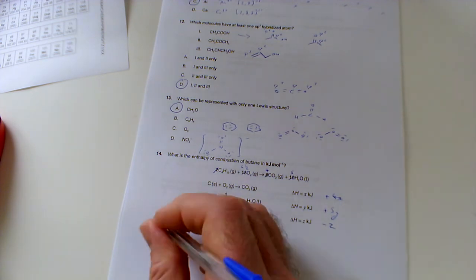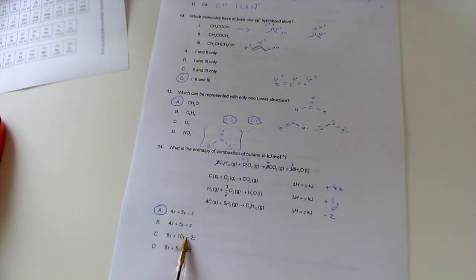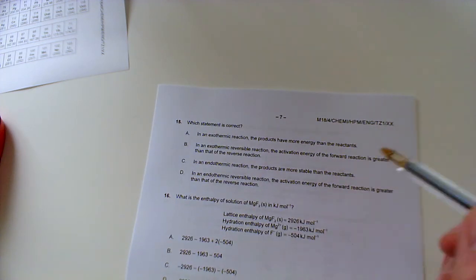Looking at the last equation, there's my butane but it's on the wrong side. It's a product where I need it as a reactant. The good news is there's one of them and I only want one, so basically I just need to flip this equation around. If I flip this equation around, all I need to do is change the sign from plus z to minus z. So my enthalpy change is plus 4x plus 5y minus z. So that matches up with A. Notice they were trying to catch you out on this one. That would be if you'd left the equation as it was, but then that wouldn't have been the standard enthalpy change. We need to burn just one mole of butane.